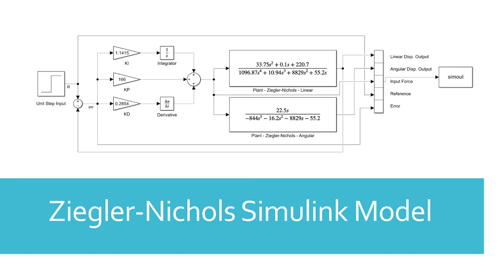The Ziegler-Nichols Simulink model utilizes the following selected gains: a proportional gain, kp, of 166, an integral gain, ki, of 1.1415, and a derivative gain, kd, of 0.2854.